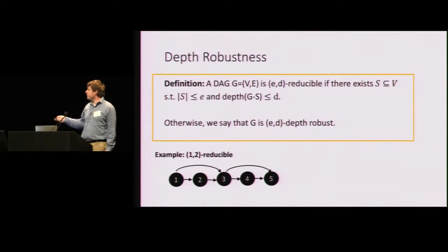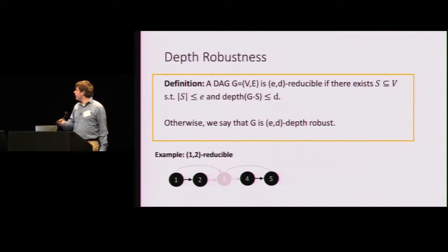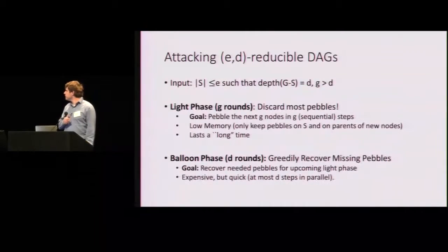And of course, if a graph is not ED reducible, then we say it's ED depth robust. So a simple example here, here's a 1, 2 reducible graph. That means we can delete one node and reduce the depth to two. Pretty easy to spot here. Just delete node three and it's easy to visually verify that any path has length two.